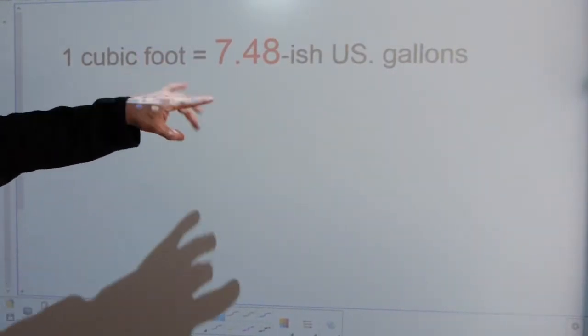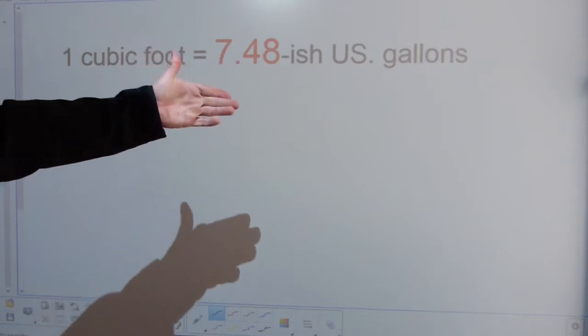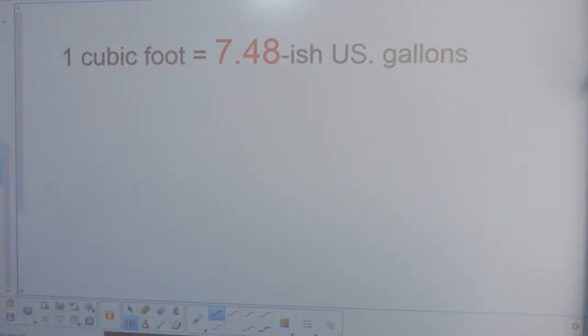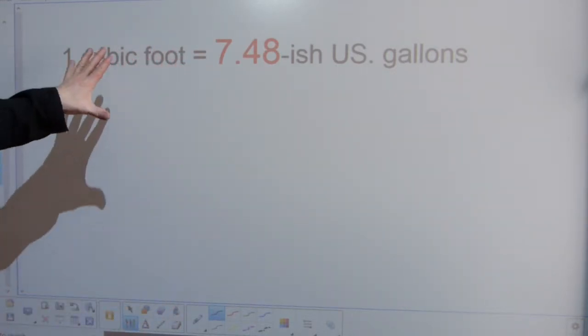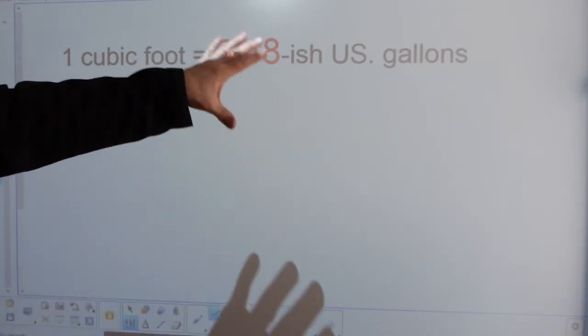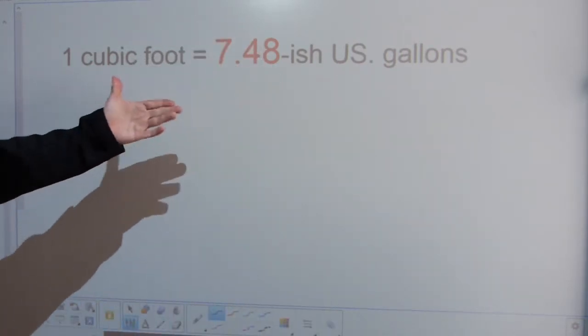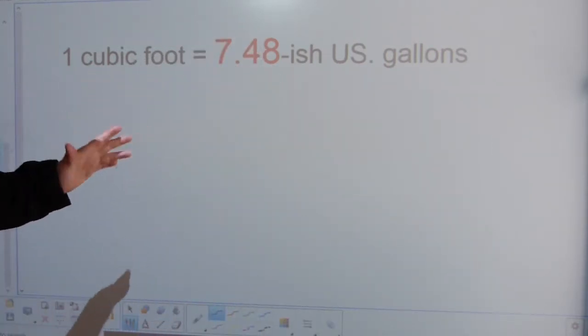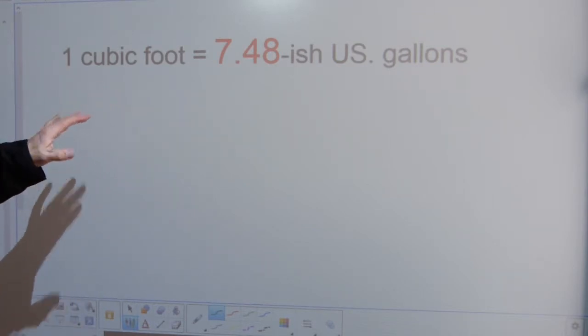The cubic foot needs to be converted to US gallons, or the other way around. 7.48 is your conversion factor between volume of space and liquid capacity. They look alike, they sound alike, they are related to each other, but they are different. So capacity is not the same as volume.